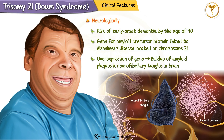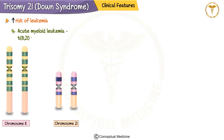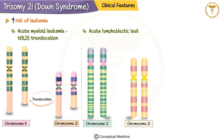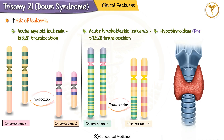Patients with Down syndrome also have an increased risk of certain medical conditions. These include leukemia — specifically acute myeloid leukemia (AML) associated with the t(8;21) translocation, and acute lymphoblastic leukemia (ALL) with the t(12;21) translocation. They are also prone to hypothyroidism, which can present as lethargy or developmental delays, which is why annual thyroid screenings are recommended.